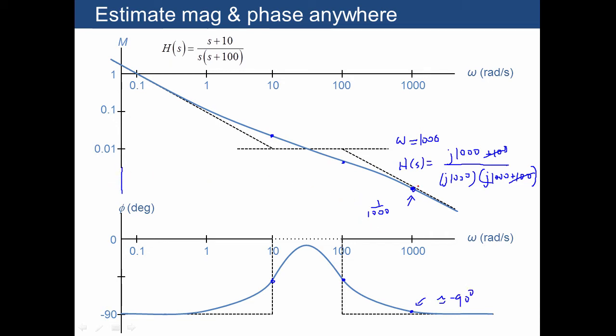We didn't actually sketch in what this value is, but if we go one additional tick mark down, that would be 1 over 1,000. You can see that we roughly made the right decision on both the magnitude and the phase for omega equals 1,000.